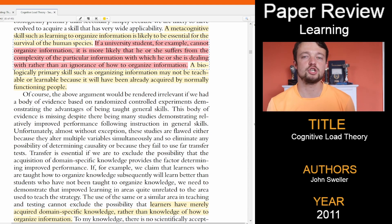It is when the information is too complex that we may need assistance. An example used in the paper is a university student - if they cannot organize information, it is more likely that they suffer from the complexity of the information they are dealing with, rather than an ignorance of how to organize information. Going on to say that a biological primary skill like organizing information might not be teachable, but the secondary skill of using the information could be.